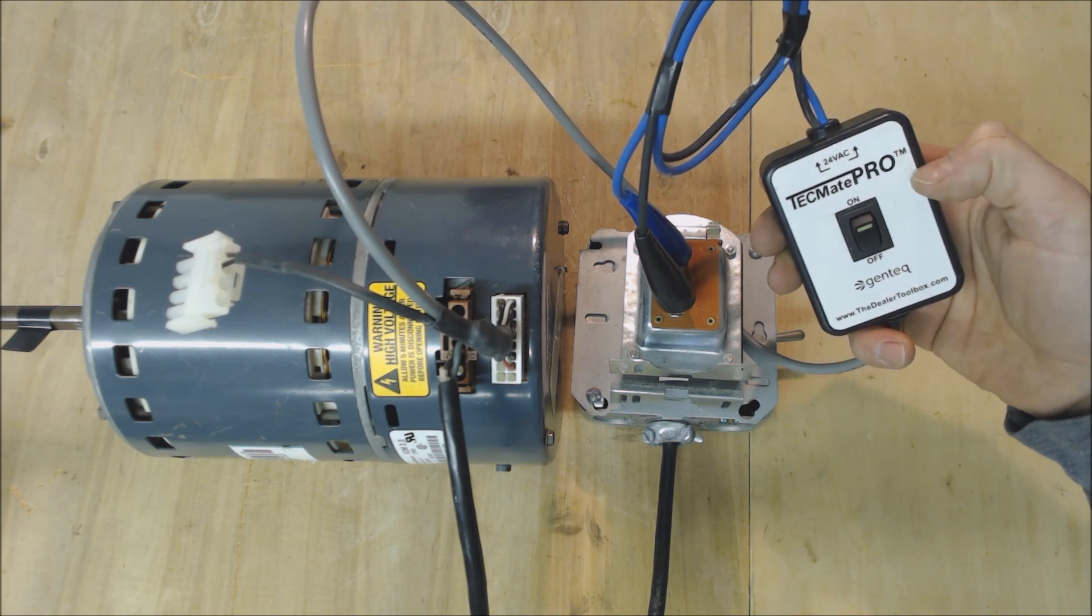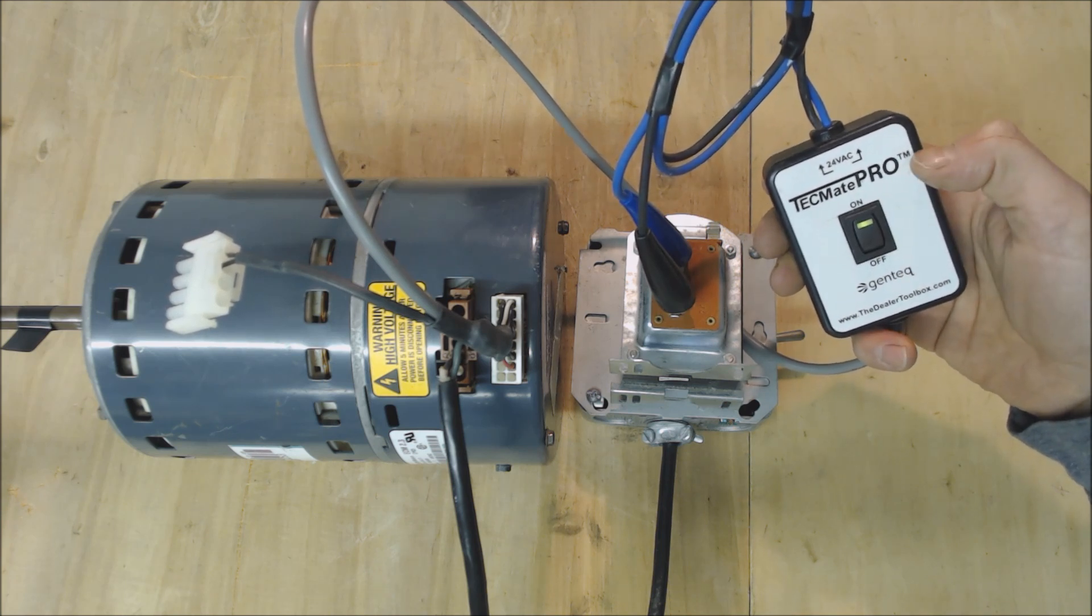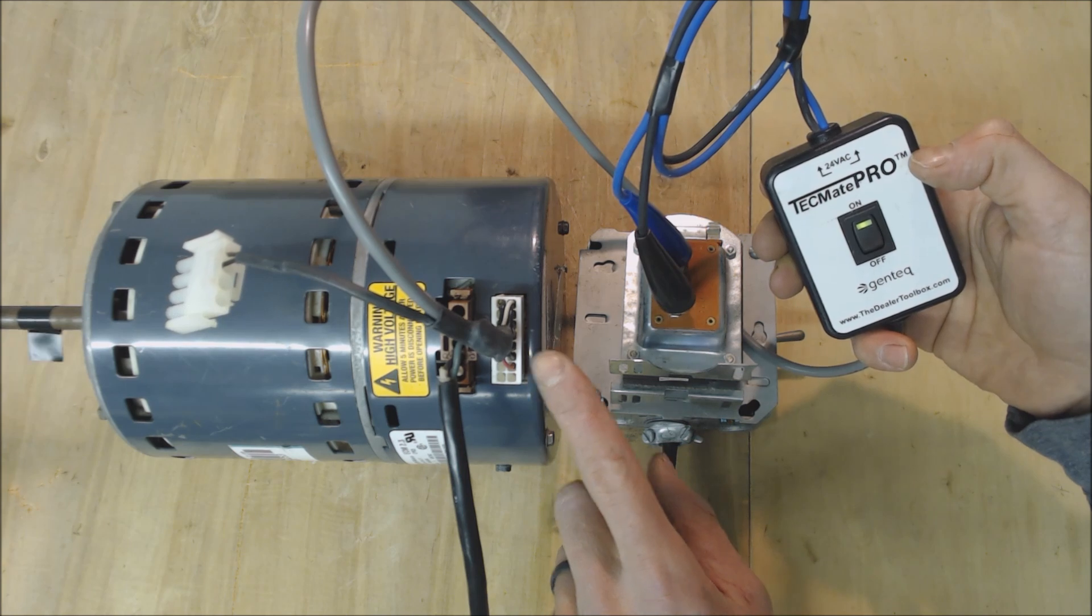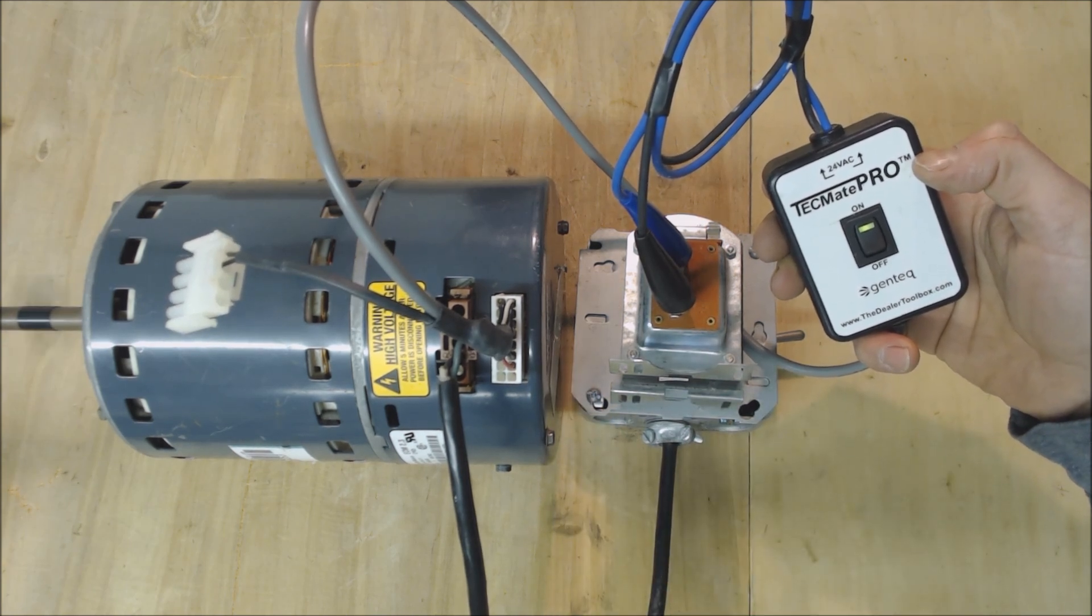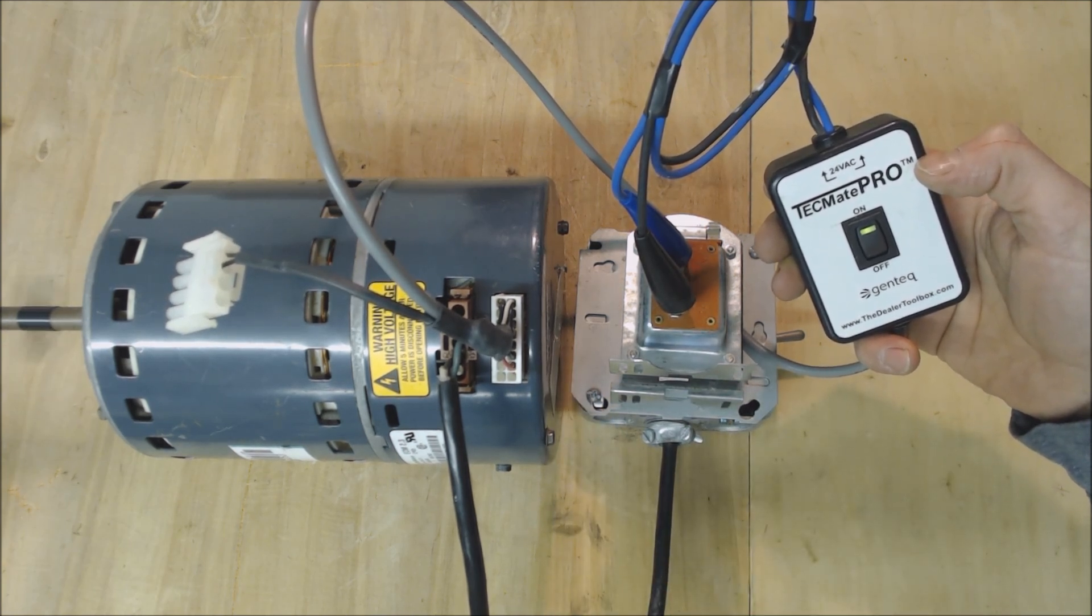Now you see that the power is coming over to the Techmate Pro. We're going to go ahead and turn it on applying 24 volts over to the pin connector and you see that our blower motor is operating.